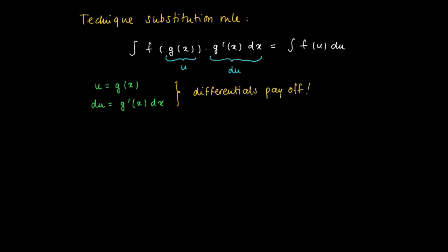So here's an example. Look at the following example where we try to find the primitives of 2x times the square root of 1 plus x squared dx.